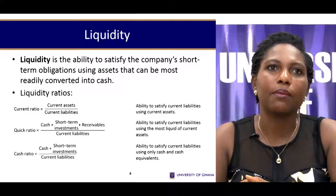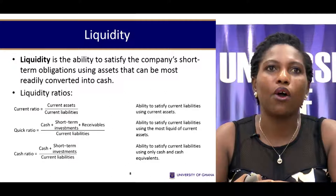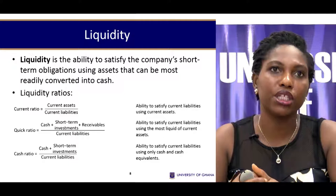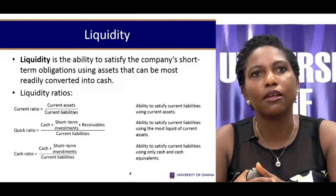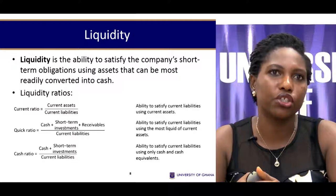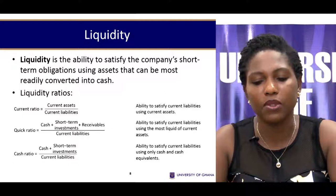Because current assets include inventory, the quick ratio goes further — removing inventory from current assets before dividing by current liabilities. A value greater than one means the firm can settle short-term liabilities even without selling inventory, which can take longer to convert to cash. The cash ratio further narrows the focus to cash and near-cash items only.